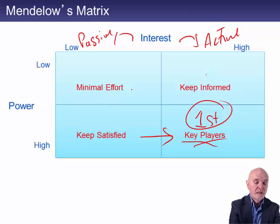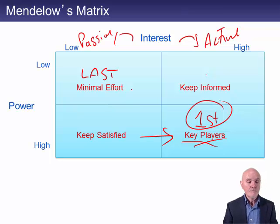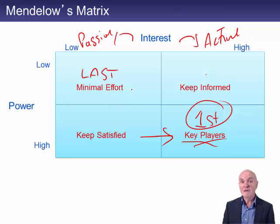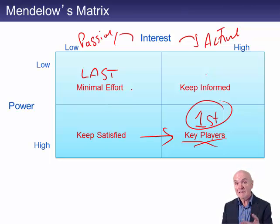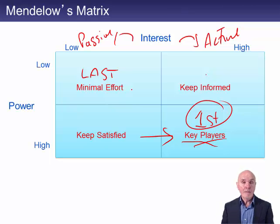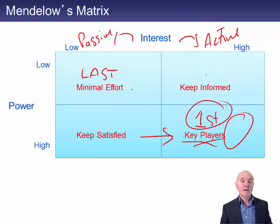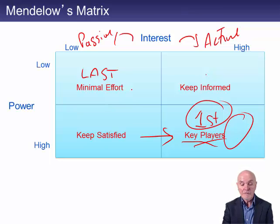Finally, we have the minimal effort group — these are last in the queue. To some extent you can ignore these people. Minimal effort is a more politically acceptable way of saying they don't have much power and aren't very interested in what's happening anyway — they will be right at the end of the queue when it comes to dividing up the cake. Again, conflicts are inevitable, and sometimes you can have two lots of key players who want different things, in which case management is going to have to be quite clever at trying to deal with these disputes.